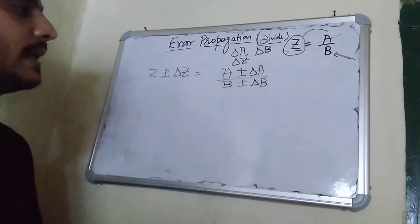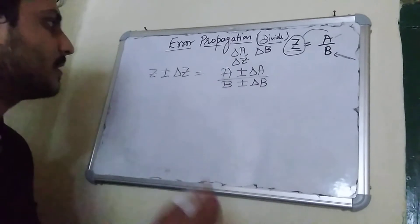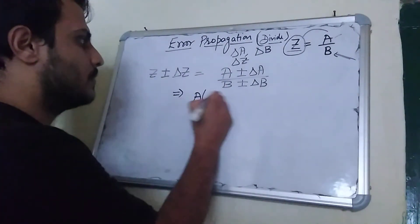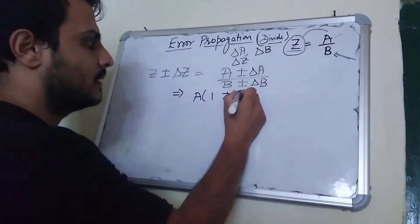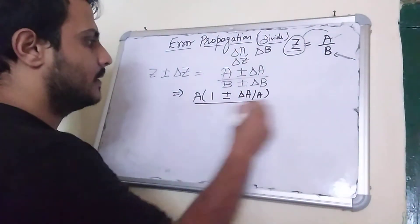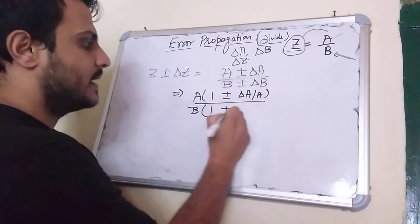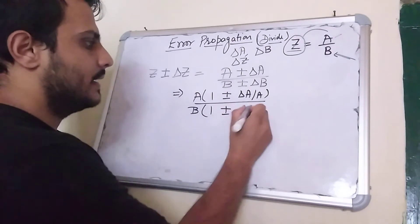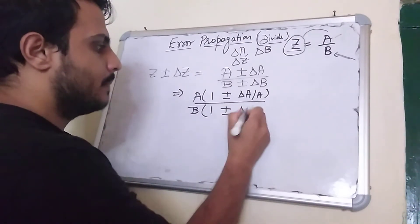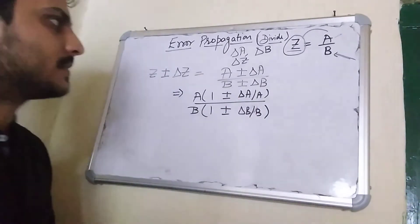After measuring capital A and capital B, I will do a little bit of mathematics. I factor out A from the numerator and B from the denominator, giving: A·(1 ± δA/A) divided by B·(1 ± δB/B). I have this type of expression.